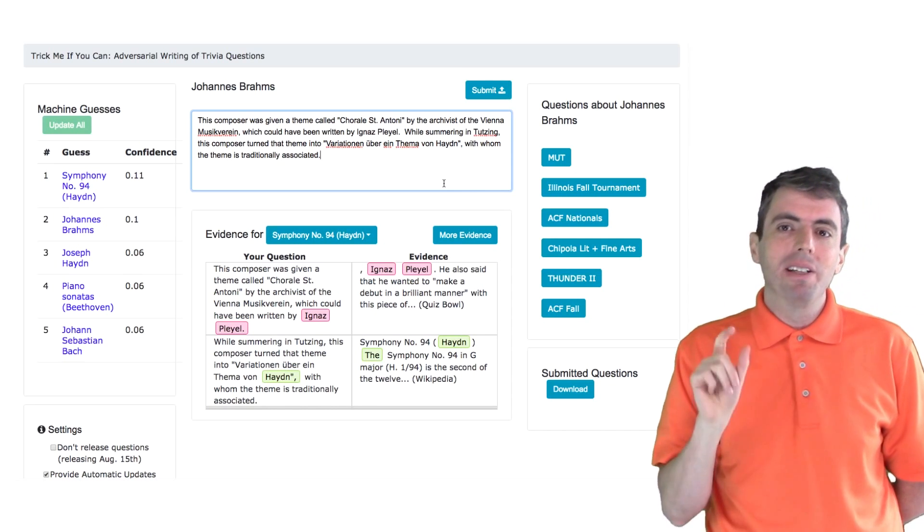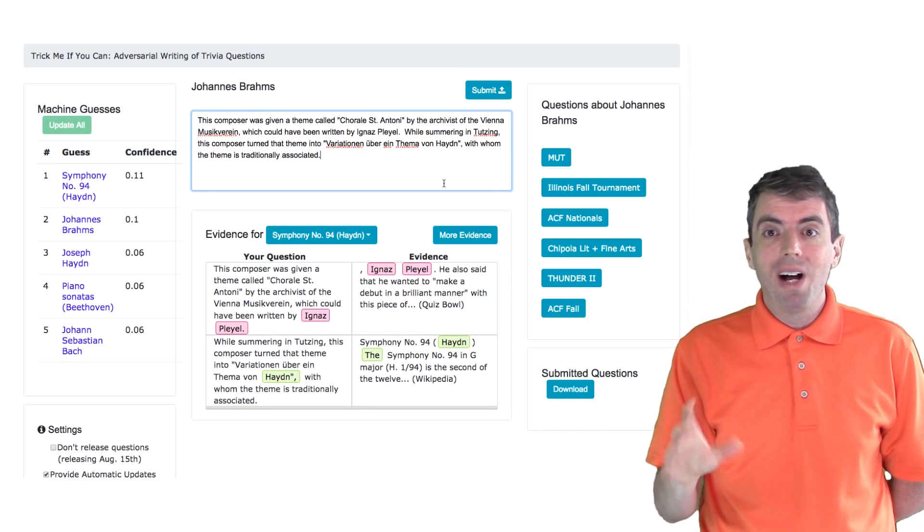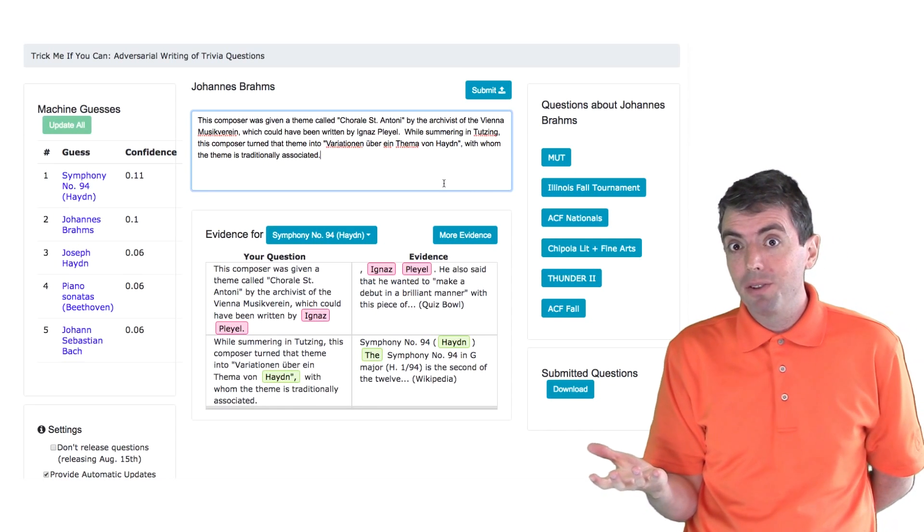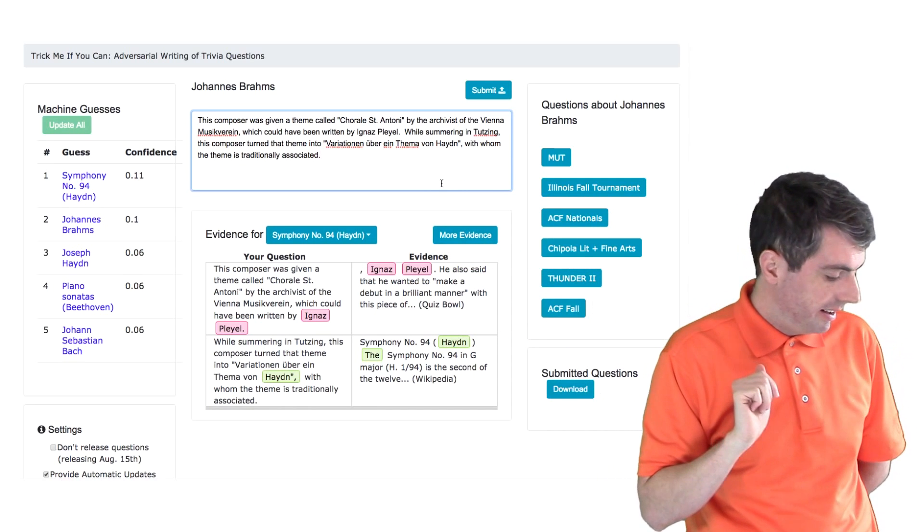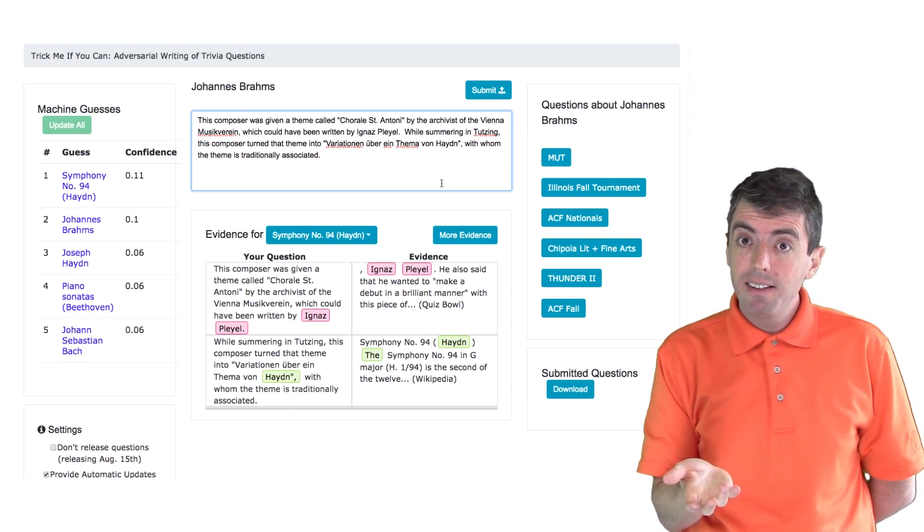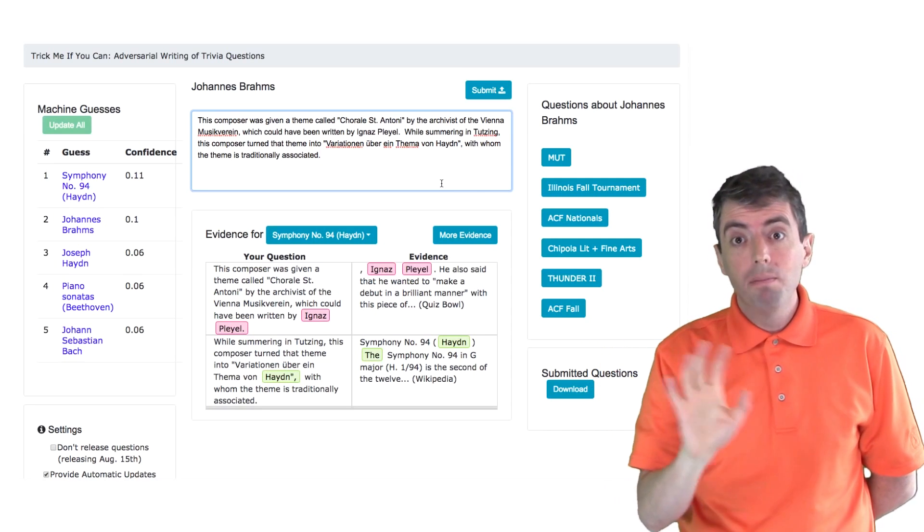So we managed to make that clue a little bit more difficult for a computer, while not making it all that more difficult for a human. And now we see that the system thinks that the answer is Symphony No. 4 by Haydn, which is in the right ballpark, but is wrong.